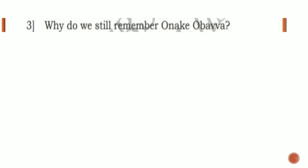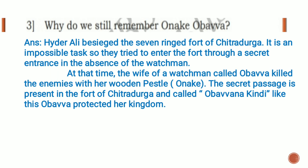Third question: why do we still remember Onake Obawa? Answer: Haidar Ali besieged the seven-ringed fort of Chitradurga. It was an impossible task, so they tried to enter the fort through a secret entrance in the absence of the watchman. At that time the wife of the watchman, called Obawa, killed the enemies with her wooden pestle. The secret passage in the fort of Chitradurga is called Obawana Kindi. Like this, Obawa protected her kingdom.